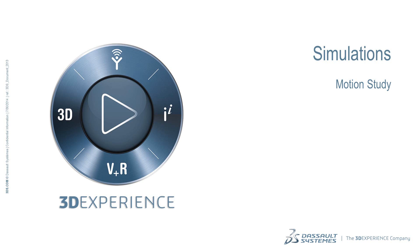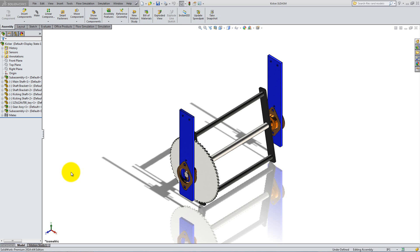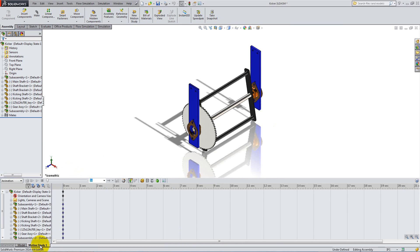In this lesson, we're going to learn how to use the Motion Study tool in SolidWorks to simulate motions such as that of the kicker assembly. We use Motion Study to visualize and analyze complex moving assemblies before constructing them in real life. Open the kicker we created in a previous video and click the Motion Study tab on the bottom left corner of the screen.